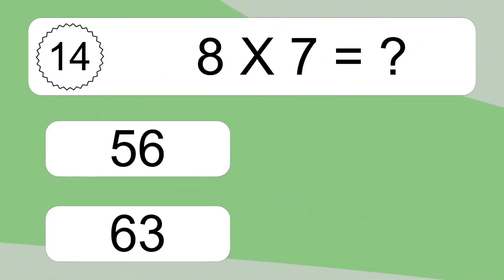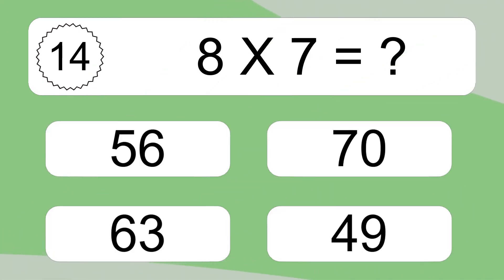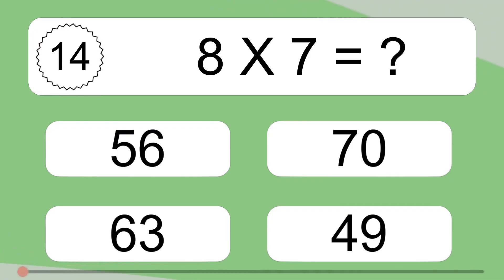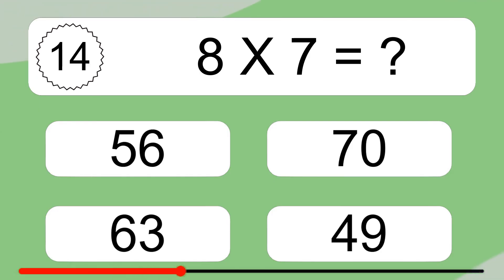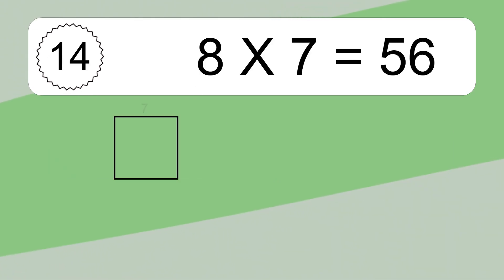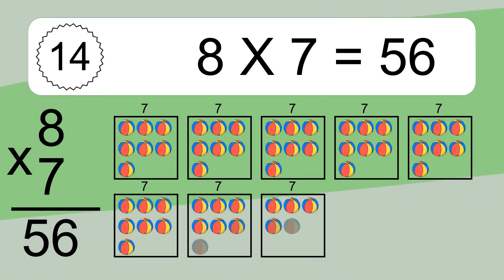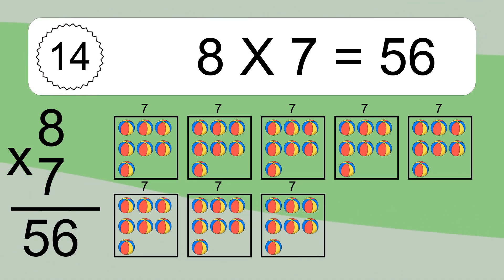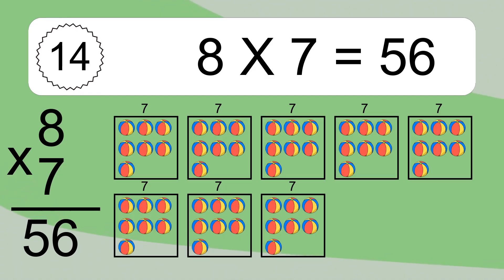8 times 7 equals what? 8 times 7 equals 56. We have 8 boxes, and each box has 7 colorful balls inside. If you count all the balls in all the boxes together, you will have 8 times 7 balls. This equals 56 balls.